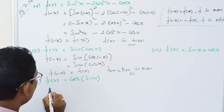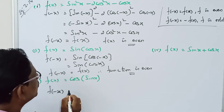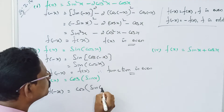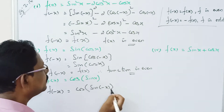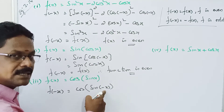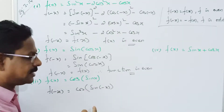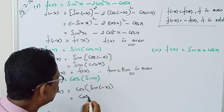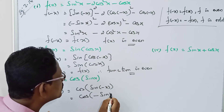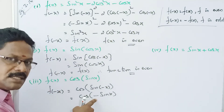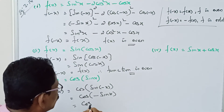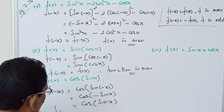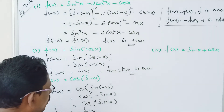For the third problem: f of minus x equals cos of sin(minus x). Since sin(minus x) equals minus sin x, it becomes cos of minus sin x. Since cos(minus theta) equals cos theta, this equals cos of sin x. Therefore f of minus x is equal to f of x.